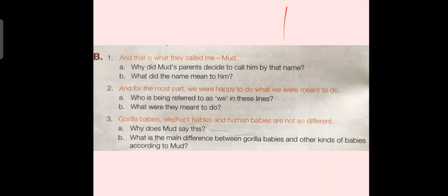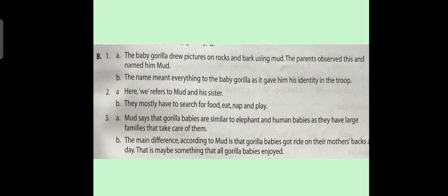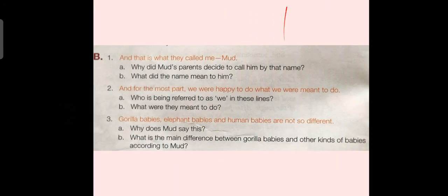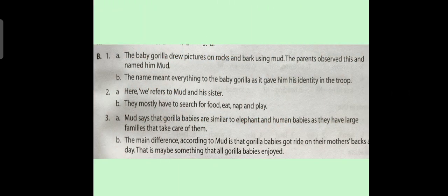Question No. 3: "Gorilla babies, elephant babies and human babies are not so different." Question A: Why does Mud say this? Answer: Mud says that gorilla babies are similar to elephant and human babies as they have large families that take care of them. Question B: What is the main difference between gorilla babies and other kinds of babies according to Mud? Answer: The main difference is that gorilla babies got to ride on their mother's back — that is something all gorilla babies enjoyed.